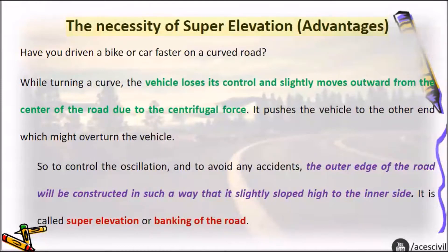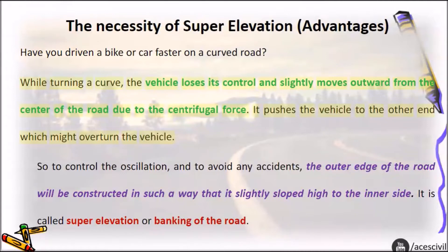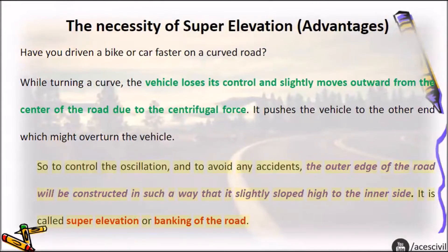The necessity and advantages of super elevation: Have you driven a bike or car faster on a curved road? While turning a curve, the vehicle loses its control and slightly moves outward from the center of the road due to centrifugal force, which pushes the vehicle outward and might overturn it. So to control the oscillation and to avoid accidents, the outer edge of the road is constructed slightly sloped high to the inner side — this is called super elevation, or banking of the road.